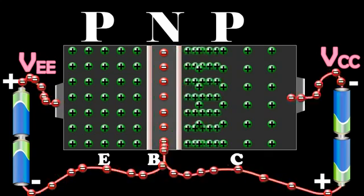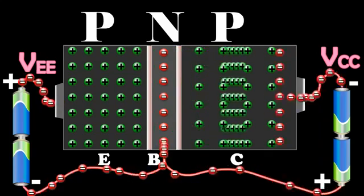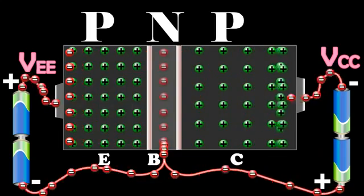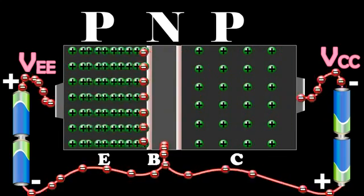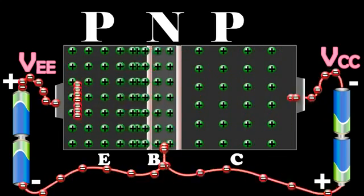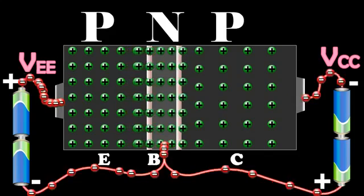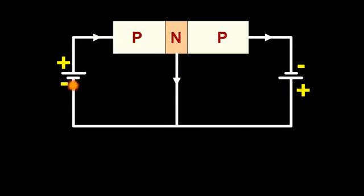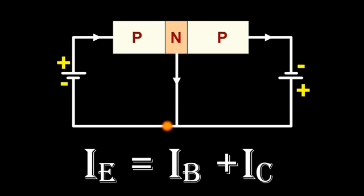In the external circuit, it is due to the flow of electrons from the negative terminal of the battery VCC into the collector. Applying Kirchhoff's current law to the circuit, the emitter current is the sum of collector current and base current, that is IE equals IB plus IC.